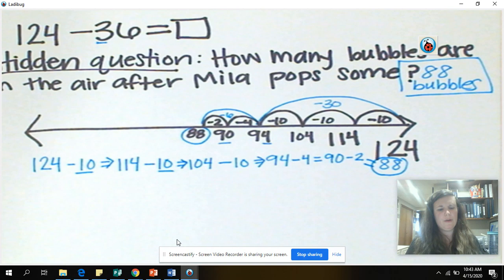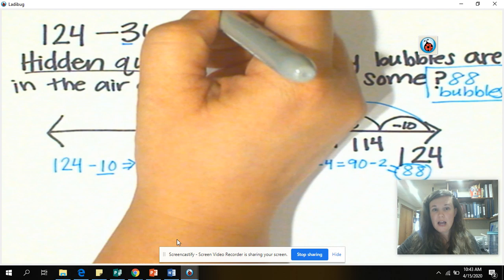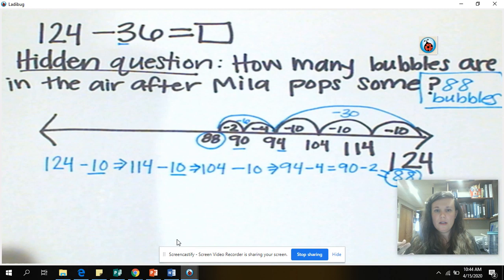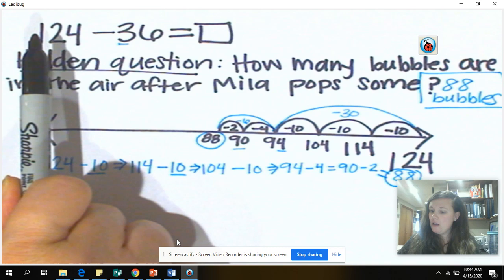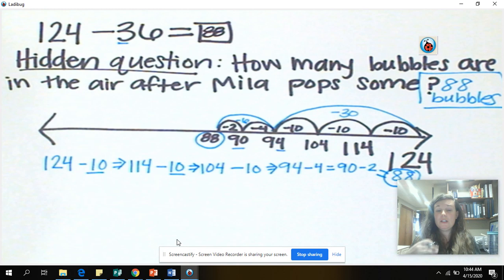Mrs. Clark blew 124 bubbles outside. Mila ran to pop 36 of them. So Mrs. Clark blew 79 more bubbles. How many bubbles are left in the air? Going back to how we explain what's in our problem and what we need to find out, we got to be those detectives. We did 124 minus 36, which got us to 88. We now have to - Mrs. Clark blew more bubbles in the air. So what operation are we going to do next?